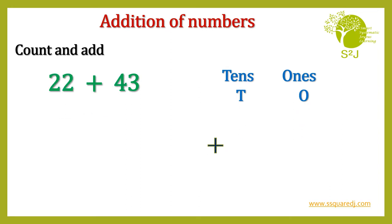22 plus 43. Let's arrange them vertically. So 22 — 2 in 1's place and 2 in 10's place.